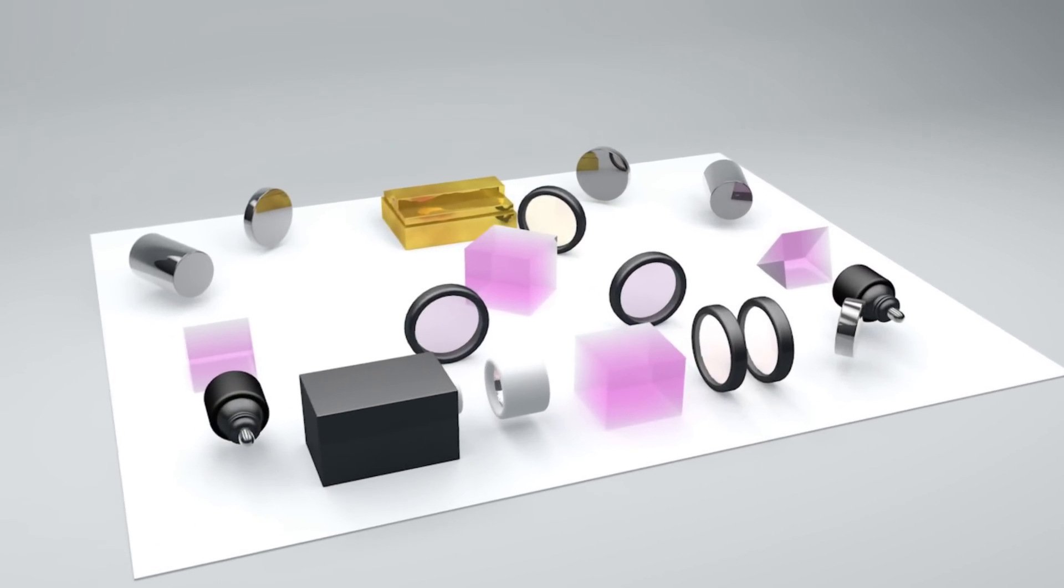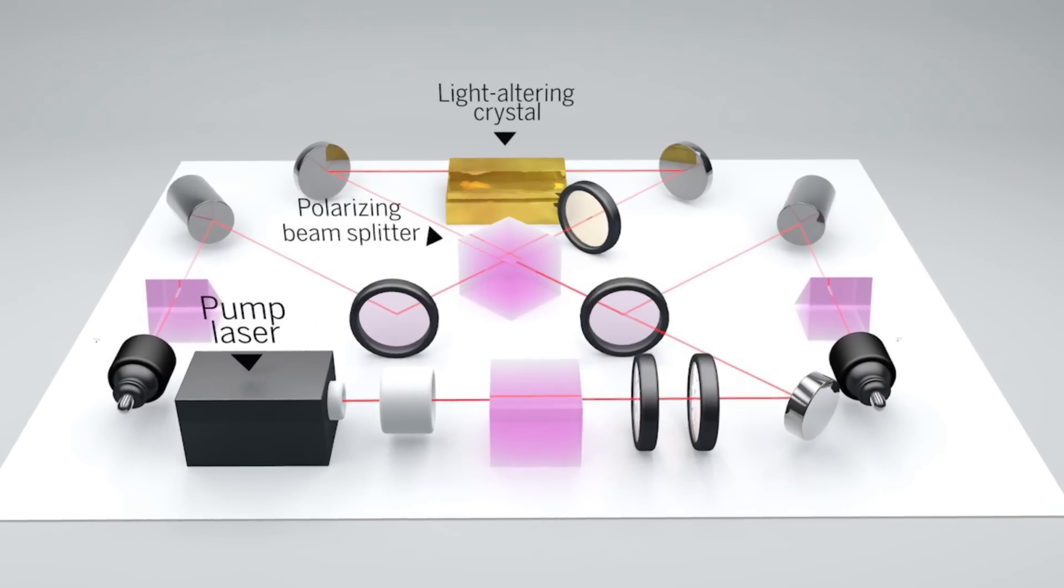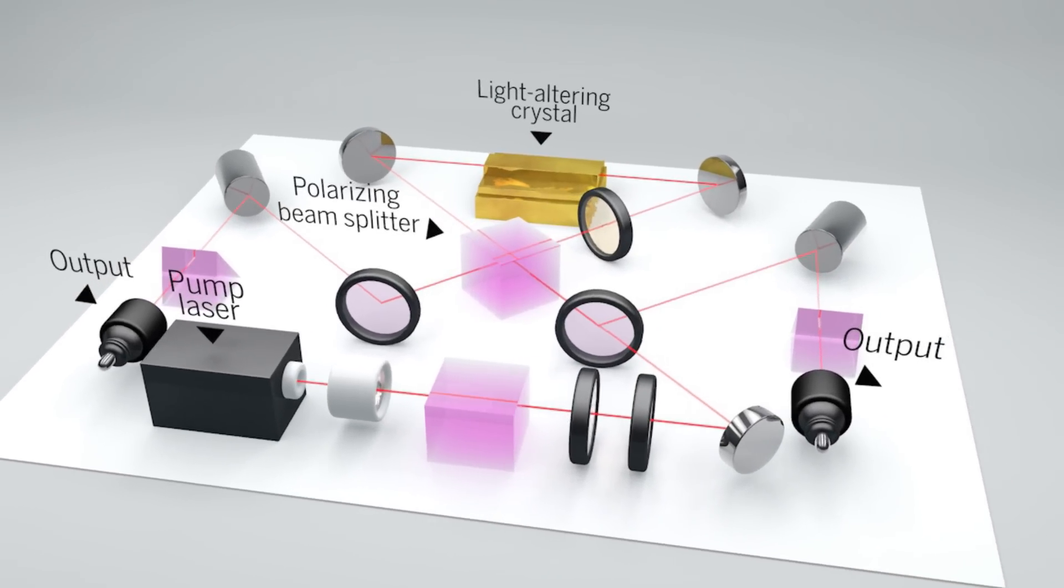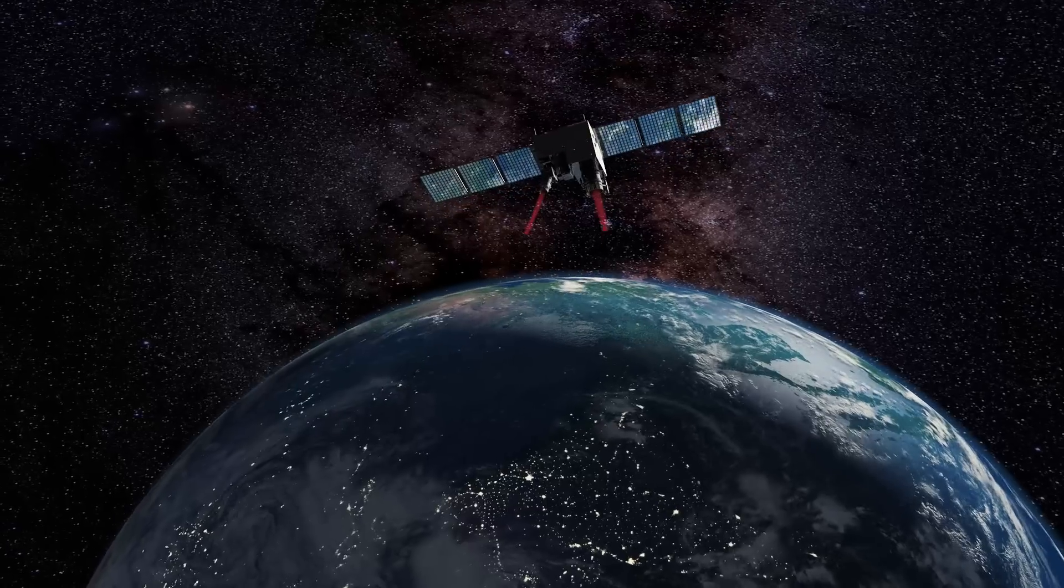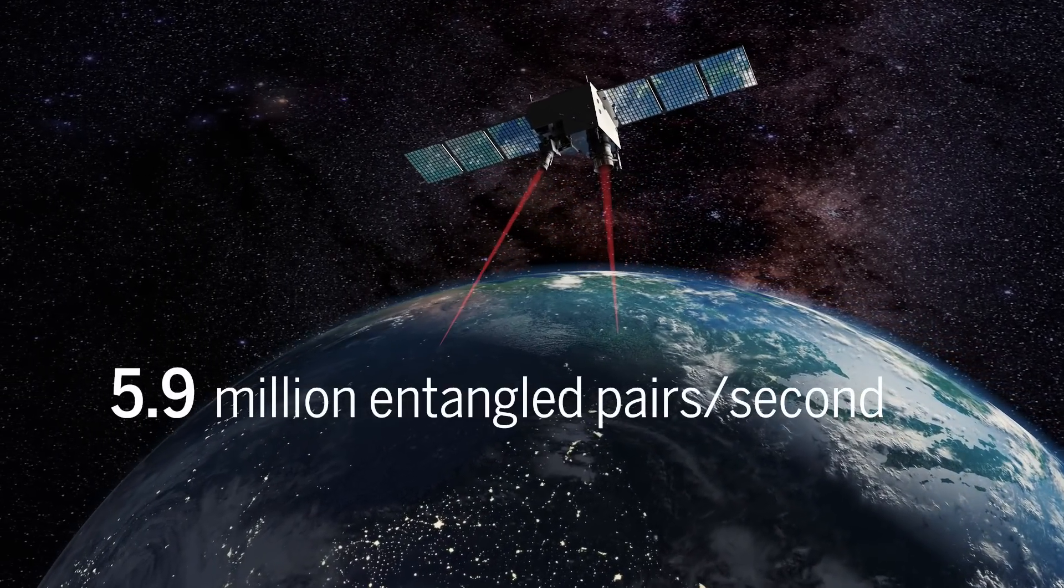Inside Micius, an ultraviolet laser is split and sent into a special crystal that produces entangled photons with opposite polarization states. The pairs are then beamed down to Earth, 5.9 million entangled pairs per second.